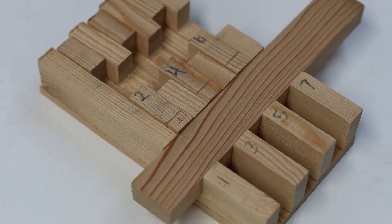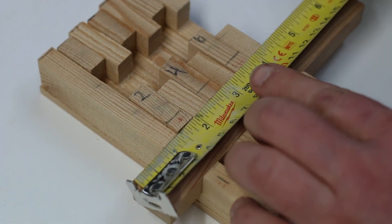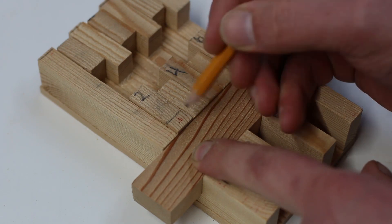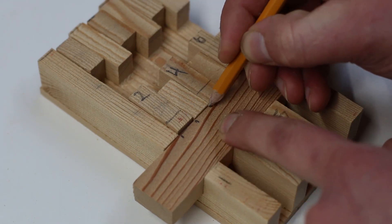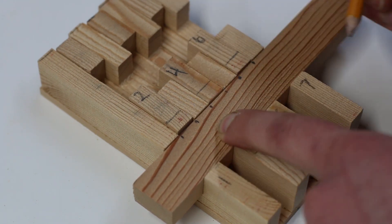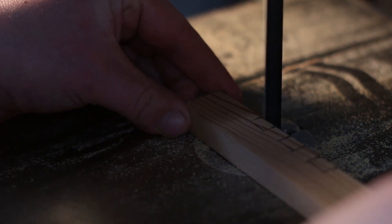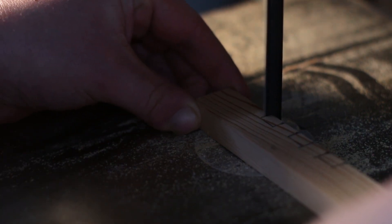I used the scraps of the 2x4 to cut out a 5 eighths inch by 1 inch deadbolt and placed it in the lock to mark out the slots for the pins to fall into. The slots are just under a half an inch wide and are 3 eighths of an inch deep.